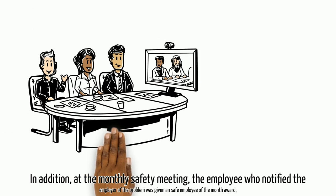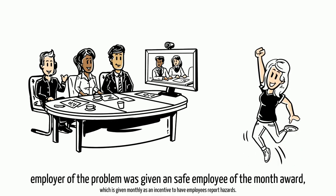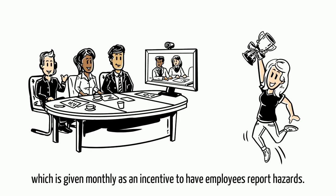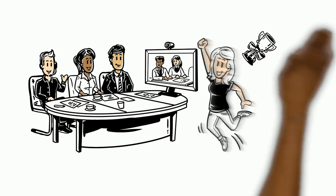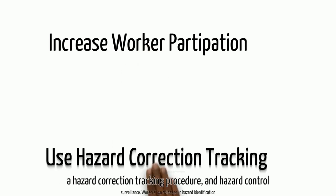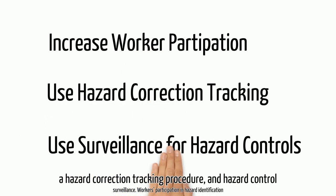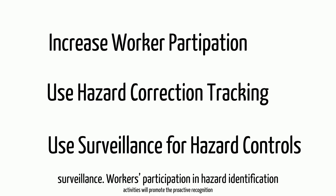In addition, at the monthly safety meeting, the employee who notified the employer of the problem was given a Safe Employee of the Month award, which is given monthly as an incentive to have employees report hazards. The safety committee then talks with workers in the area to find out how to improve work processes and controls to prevent dropped objects in the future. This example illustrates an effective use of worker participation, a hazard correction tracking procedure, and hazard control surveillance.